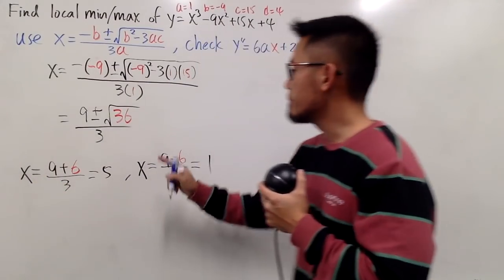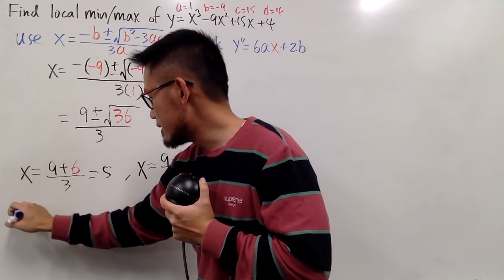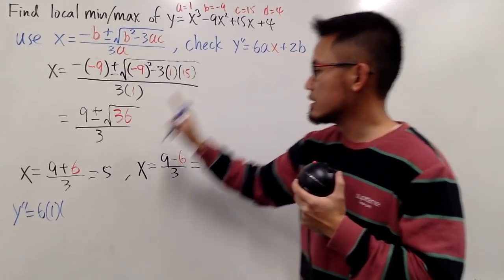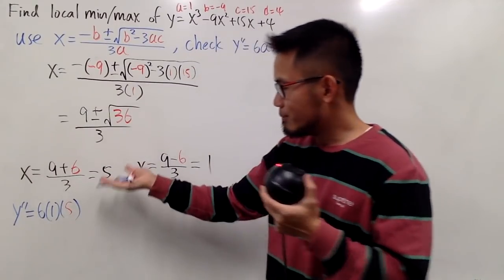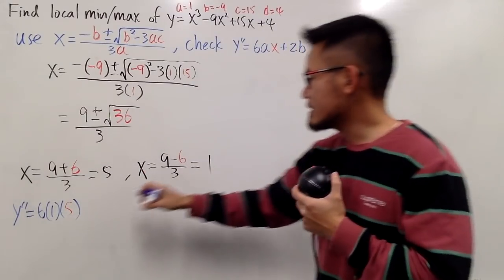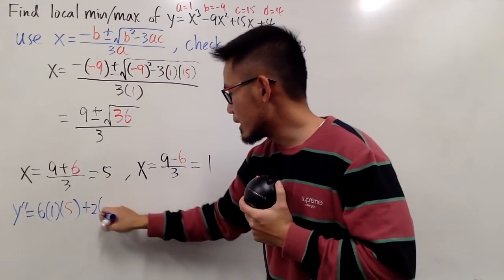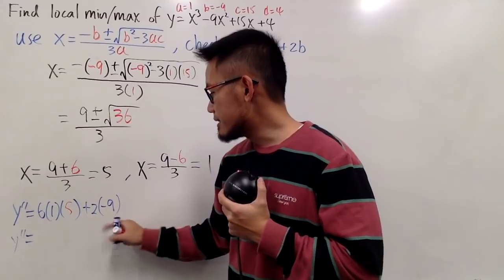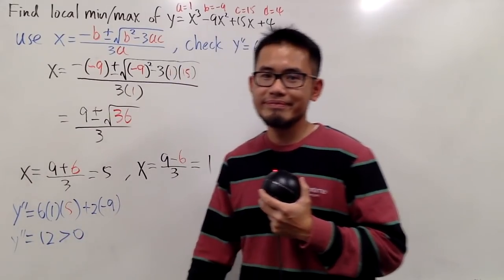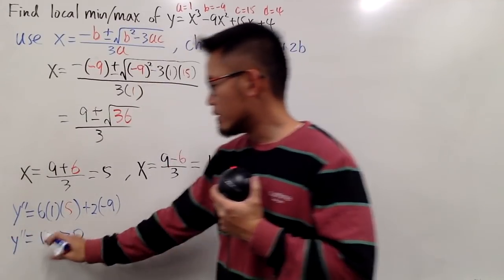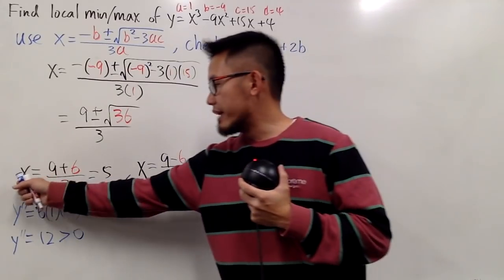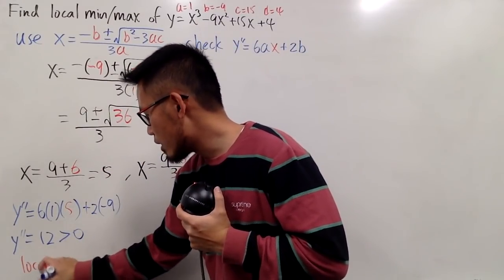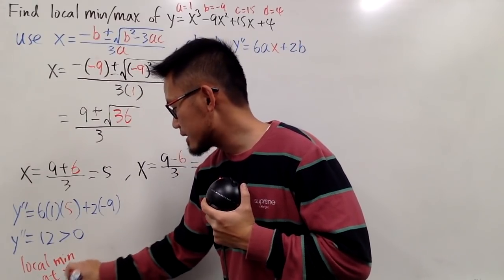Anyway, X is equal to 5 in this situation, plugging 5 in here. So this is Y double prime, which is equal to 6 times A, which is 1. And the X value is 5. We are trying to check what kind of minimum or maximum that we have. And then, plus 2 times B. B is negative 9, so 2 times negative 9, like this. Let's work this out. So this is Y double prime. This is 30 minus 18, that's 12. And that's positive 12. Notice, the second derivative is positive. That means the function at X equals 5 is concave upward. So we will have a local minimum. So right here, we will have a local minimum at X equals 5.